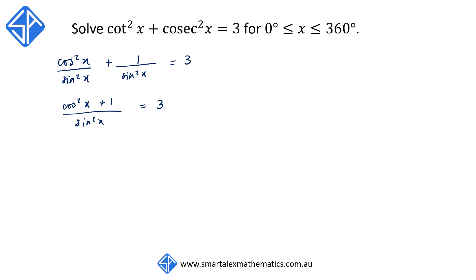Next we're going to multiply both sides by sine squared x. This gives us cos squared x plus 1 is equal to 3 sine squared x. In order to solve this now we want to convert it into a single trigonometric function. So I'm going to convert sine squared x into 1 minus cos squared x. That's the Pythagorean identity.